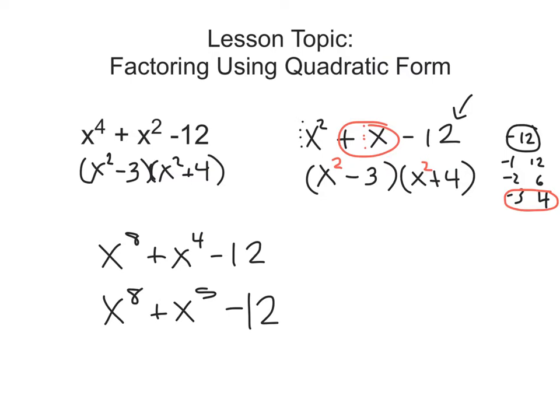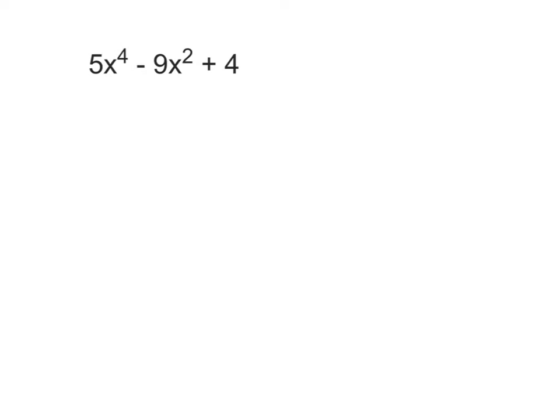Let's try a couple more examples. Here's another quadratic form: 5x to the 4th minus 9x squared plus 4. We can factor this the same way we factor a regular quadratic. I'm going to first look for a GCF. We don't have a GCF here because 5, negative 9, and 4 are not all divisible by the same number, and we do not have an x in every term. So the next step, as always, for magic number is to circle our first and last terms, a and c, and multiply them to get the magic term: 20x to the 4th.